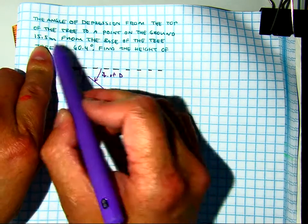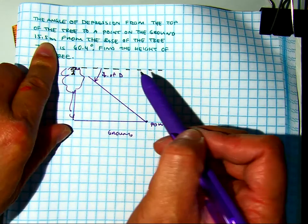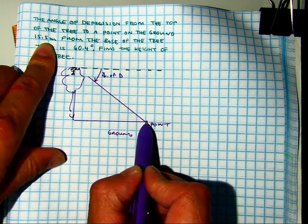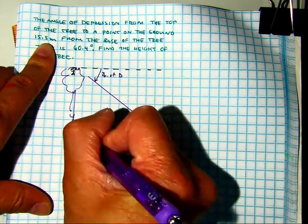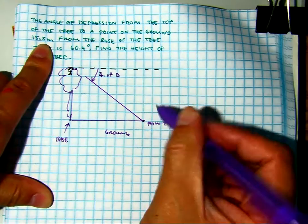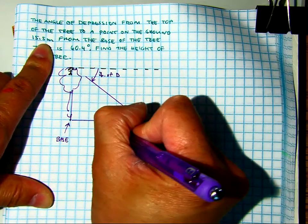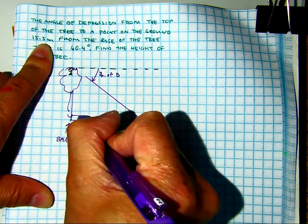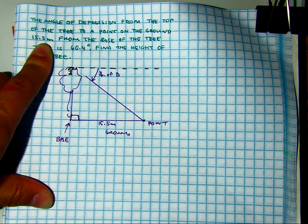And is on the ground 15.5 meters from the base of the tree. So this point and from the base of the tree. You can call that base if you want. Remember base is like bottom or like your feet. Your feet are at the bottom of your body. So this would be 15.5 meters. I have a right triangle here.